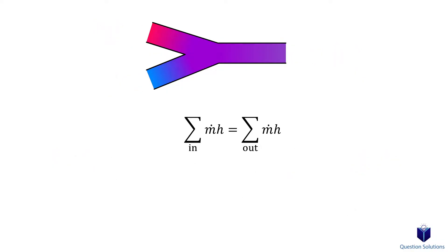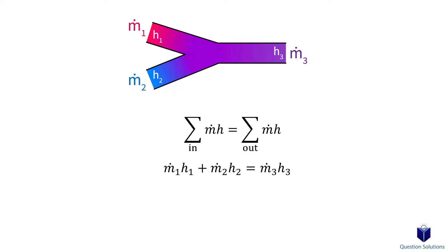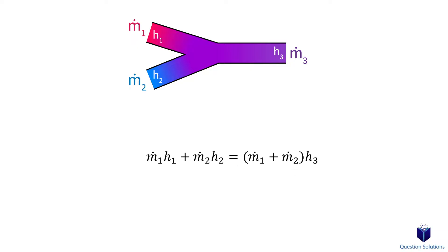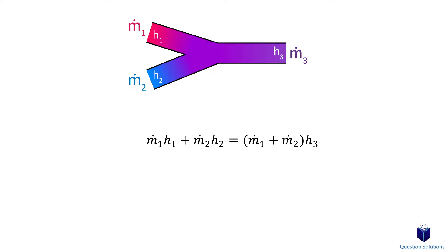Now let's label each mass flow for the two inlets and outlet. Then our energy balance equation can be written where each inlet has its own mass flow and enthalpy, and the outlet also has its own mass flow and enthalpy. Since this is a steady flow system, the outlet mass flow must equal the two inlet mass flows combined. We can substitute this value in for outlet mass flow, so for simple mixing chambers our energy balance equation simplifies.